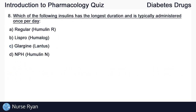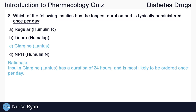Question eight: which of the following insulins has the longest duration and is typically administered once per day? The answer is C, glargine or Lantus. Lantus has a duration of 24 hours and is most likely to be ordered once per day.